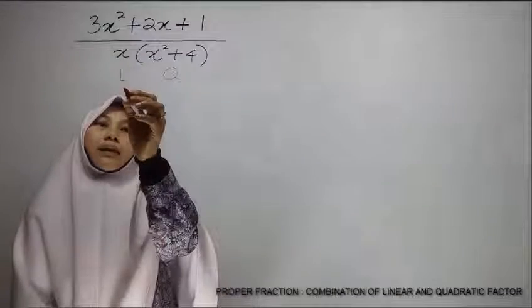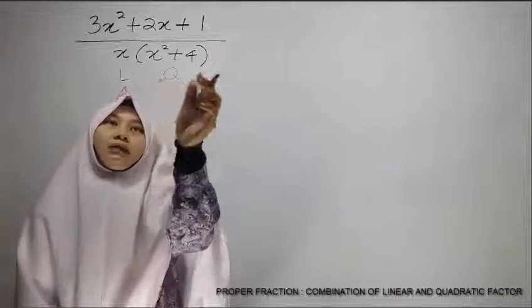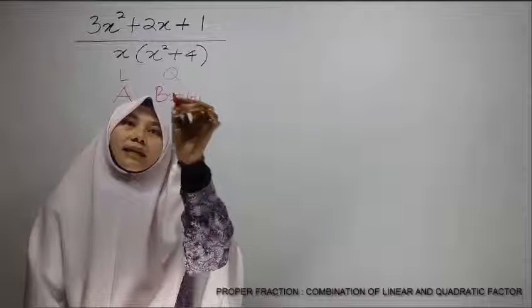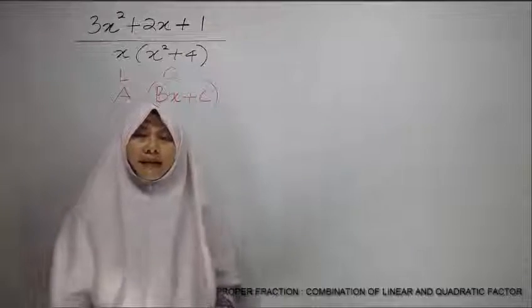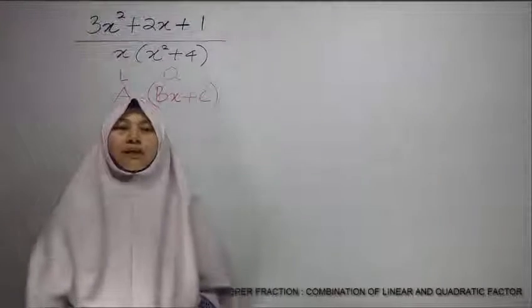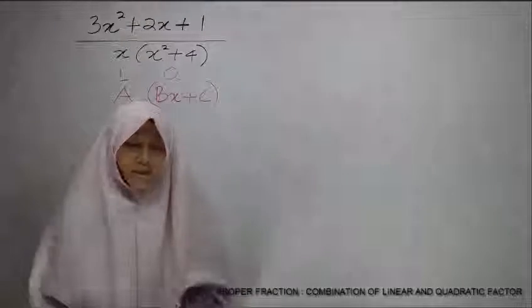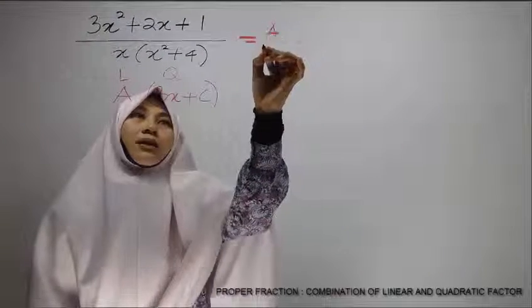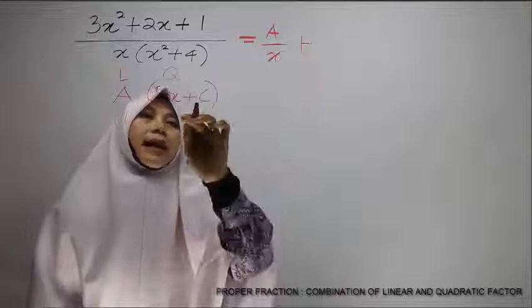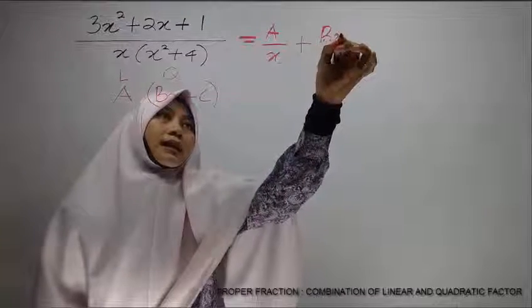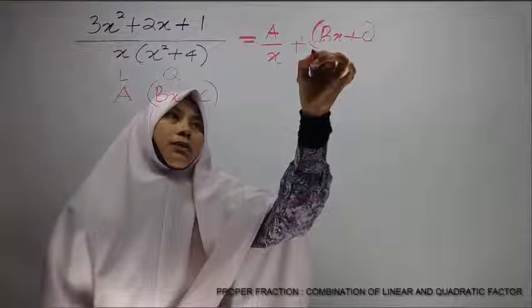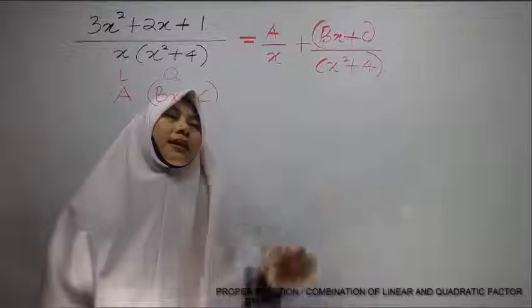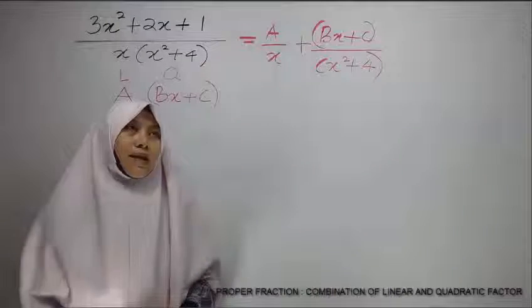Then, we write down A, and for quadratic, we write down Bx plus C with a bracket. Next, we want to write partial fraction graph using this label. So we have A over x plus Bx plus C over x squared plus 4. Now, this will be our final answer link.